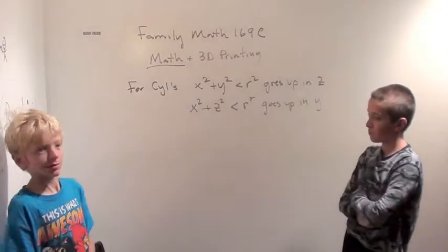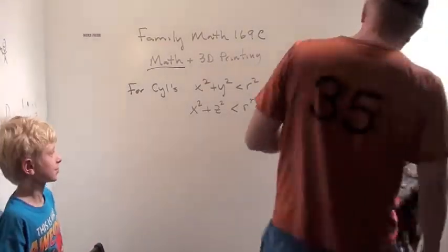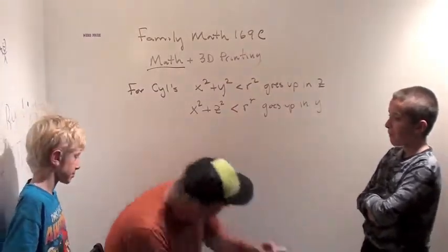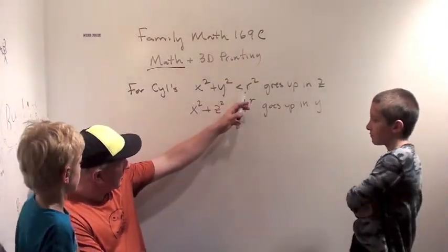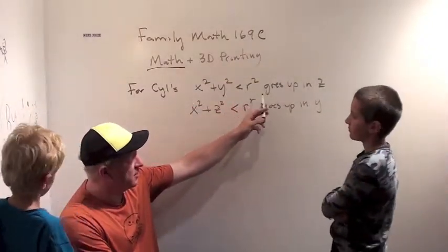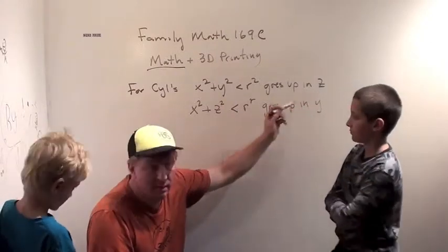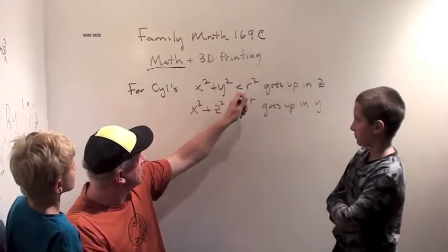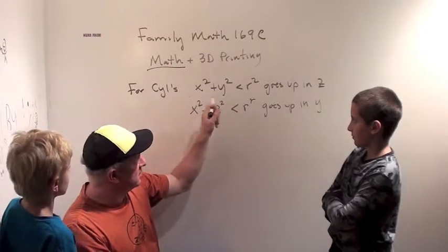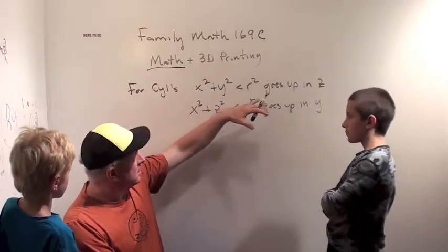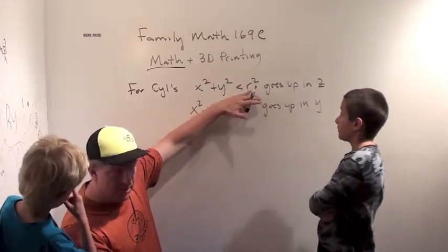Okay, so we just saw that for cylinders, when we said x squared plus y squared is less than r squared, we got something in three dimensions that went up in z, in the z direction, because this equation didn't say anything about z, so z could be anything. As long as x squared plus y squared was less than r squared.